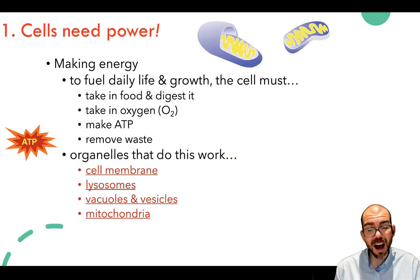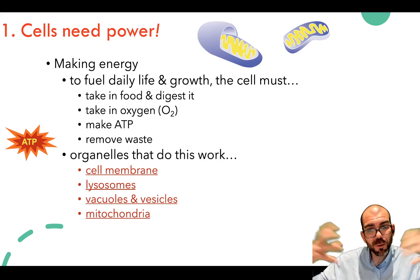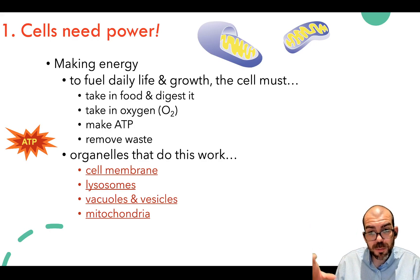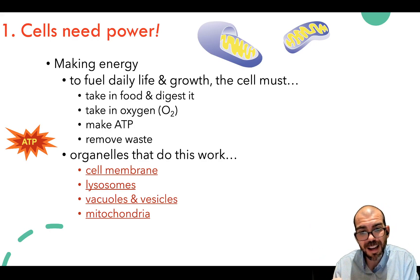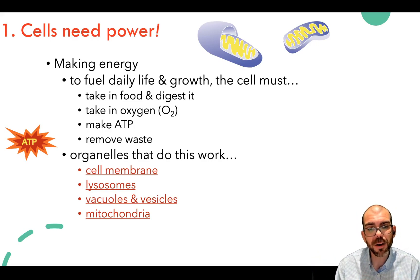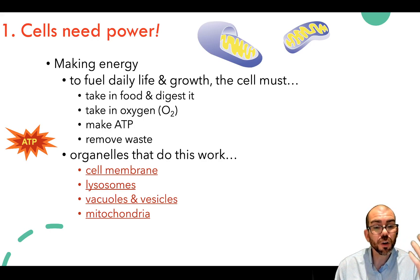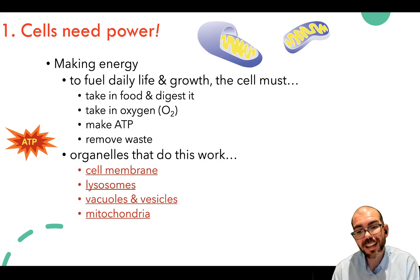This is how cells make power: the cell membrane is how foods get in and waste gets out; the lysosome breaks that food down; it's captured in a vacuole for storage or moved by a vesicle; and the mitochondria breaks it down to make ATP. In the case of plant cells, they use the chloroplast to make sugar first, and then that goes to the mitochondria.